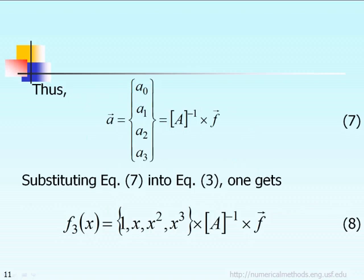In the next slide, you can see the unknown vector A is equal to A-inverse times F. So the unknown vector A is equal to the matrix capital A inverse times F. We can substitute equation 7 into equation 3 that we discussed earlier.